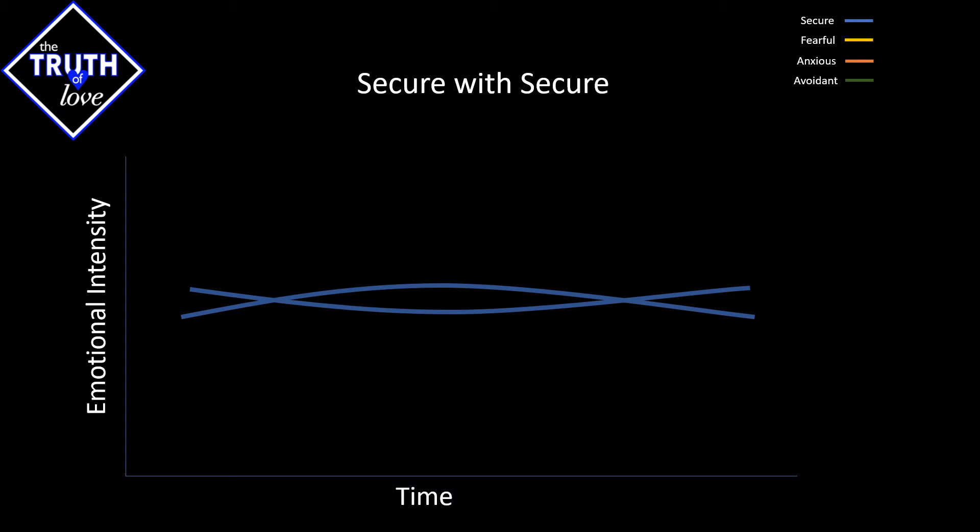So the question becomes, how do different attachment styles interact with one another? Well, I deal with attachments as I would a gravitational pull. Two different bodies, two different interpretations, each one of them has an impact on another.